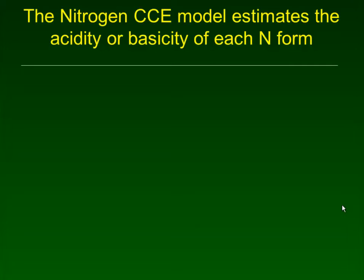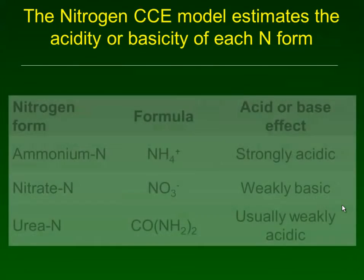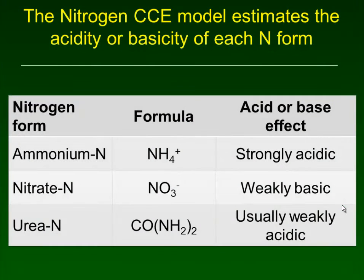The nitrogen CCE model estimates the acidity or basicity of each nitrogen form. Ammonium is strongly acidic, nitrate is weakly basic, and urea is usually weakly acidic. So the strong acid is ammonium, the weak base is nitrate, and urea is somewhere in the middle — usually weakly acidic.